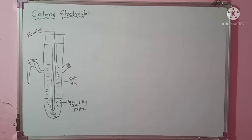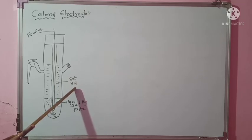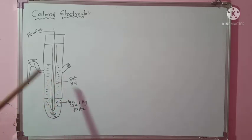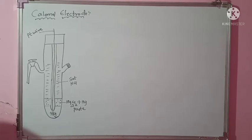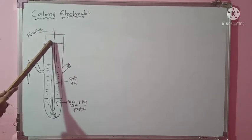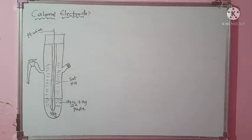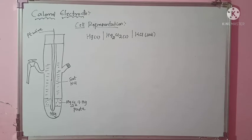The concentration of the KCl solution can be saturated, decinormal, or normal. Depending upon which concentration you take, the EMF of this electrode will vary. You can also see the platinum wire in the diagram — it is inserted into the glass tube to make the electrical contact of the electrode with the circuit.